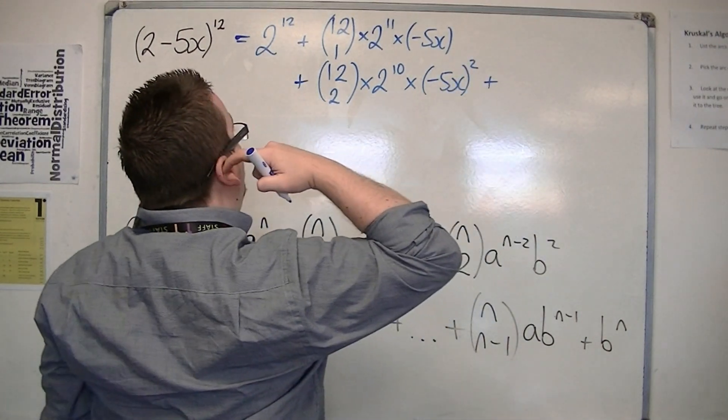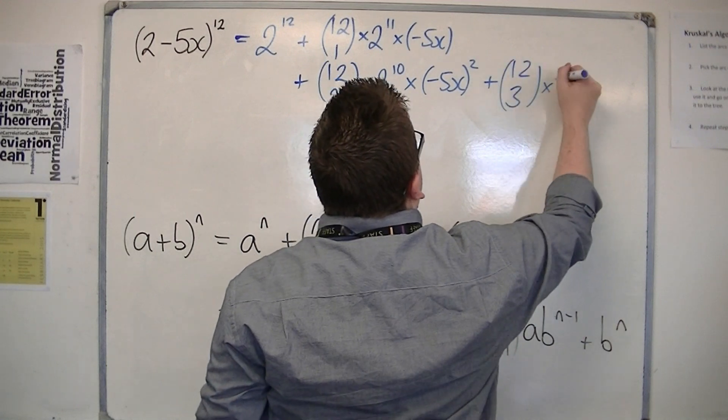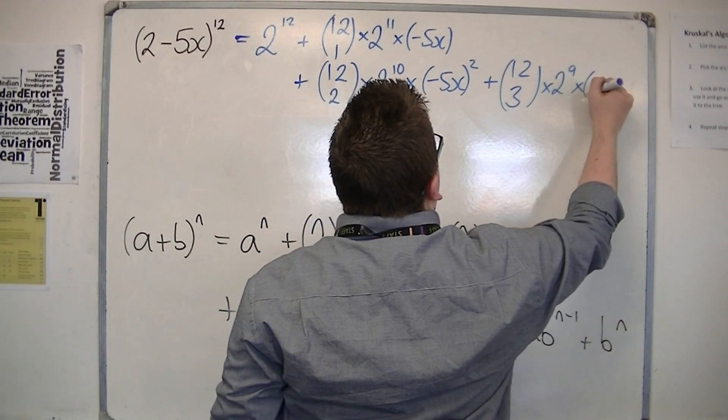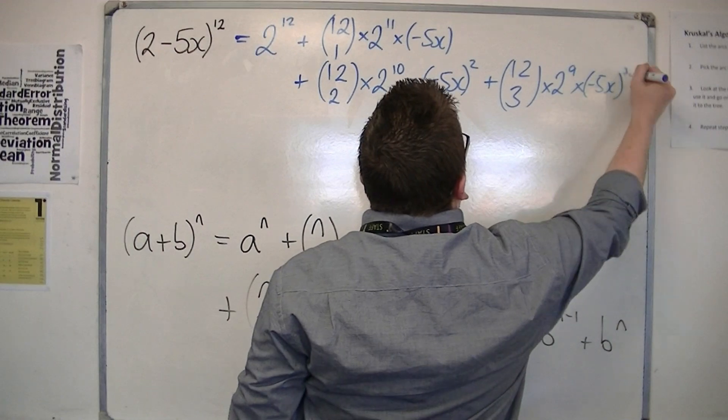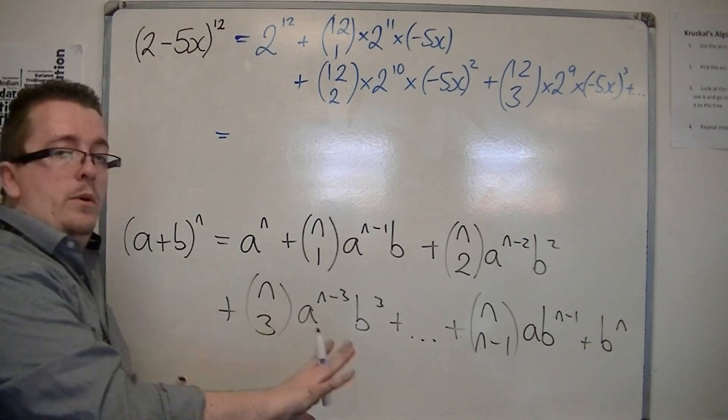Plus, the final term that we're looking at, $\binom{12}{3} \times 2^9 \times (-5x)^3$, plus other terms. So, it keeps going.